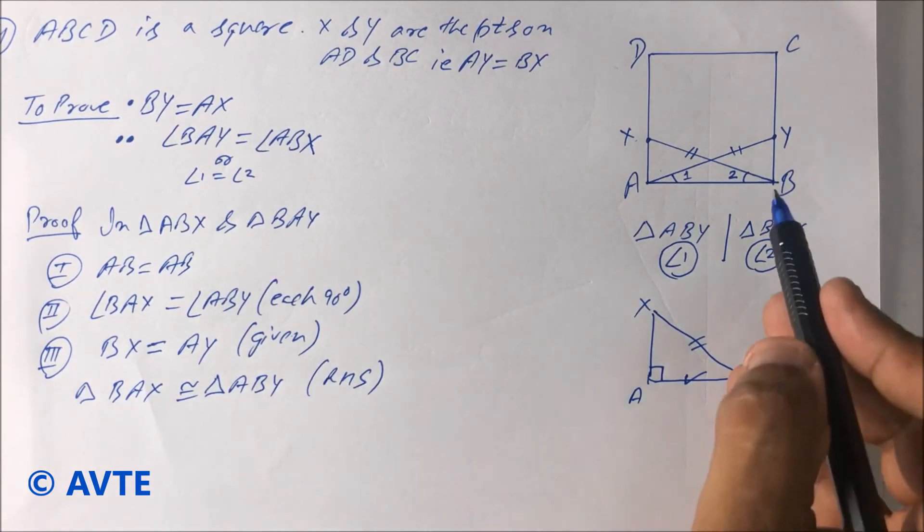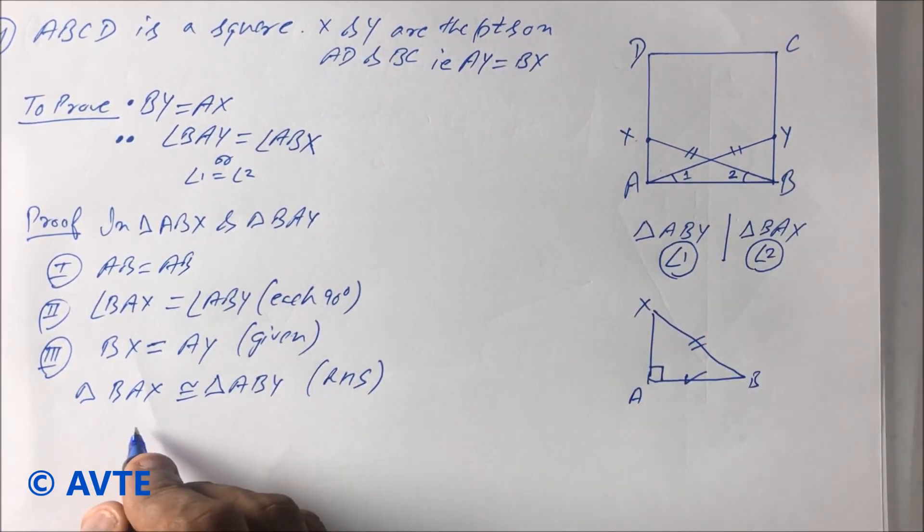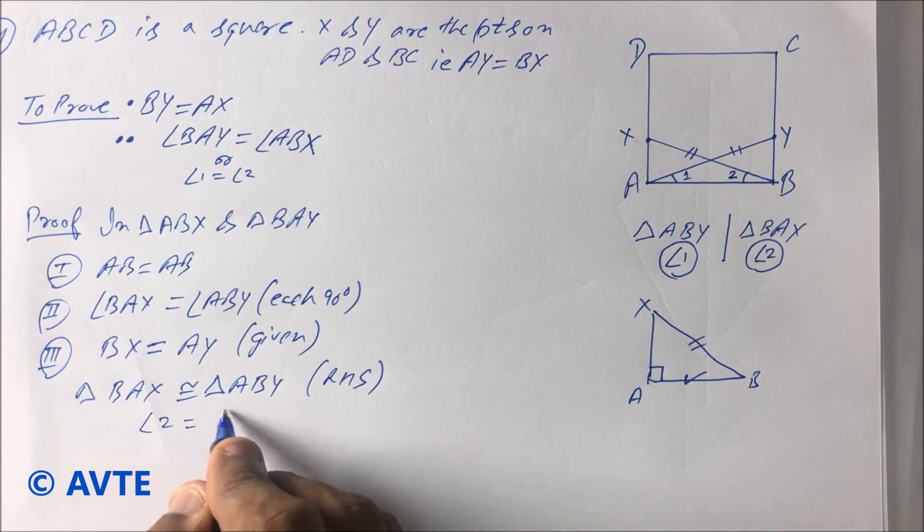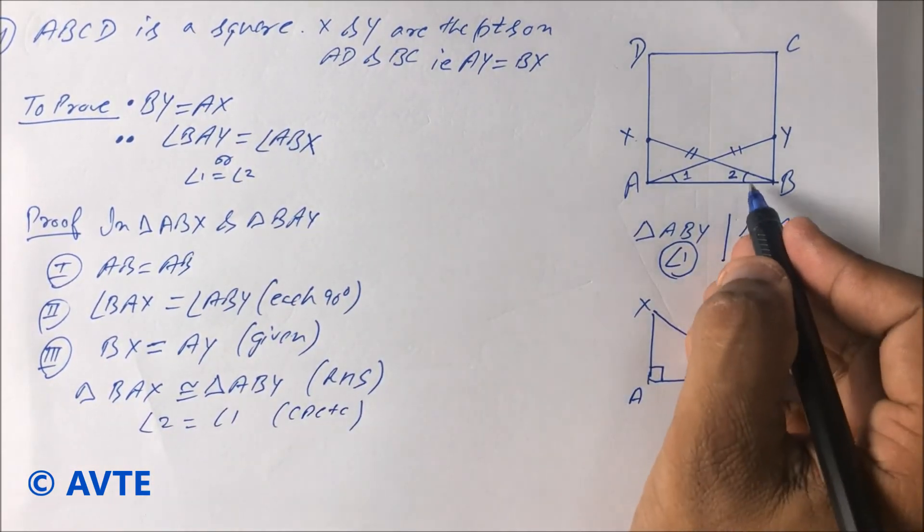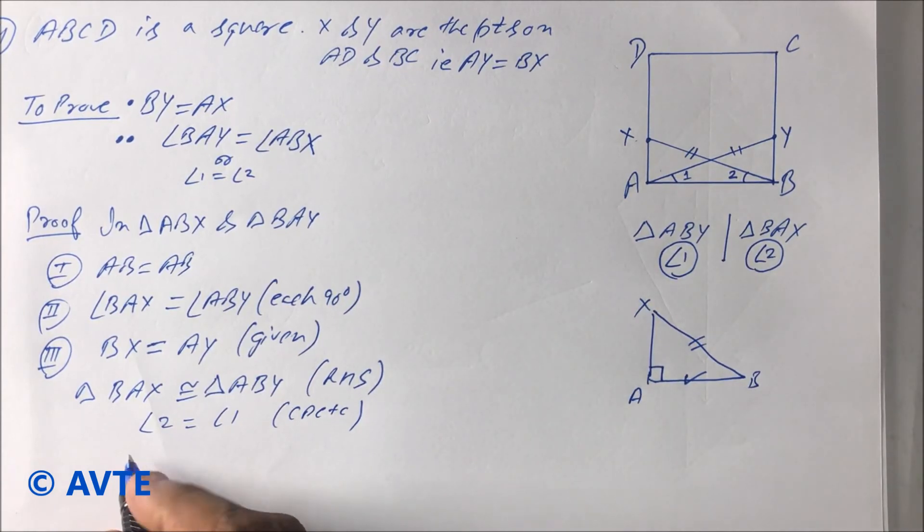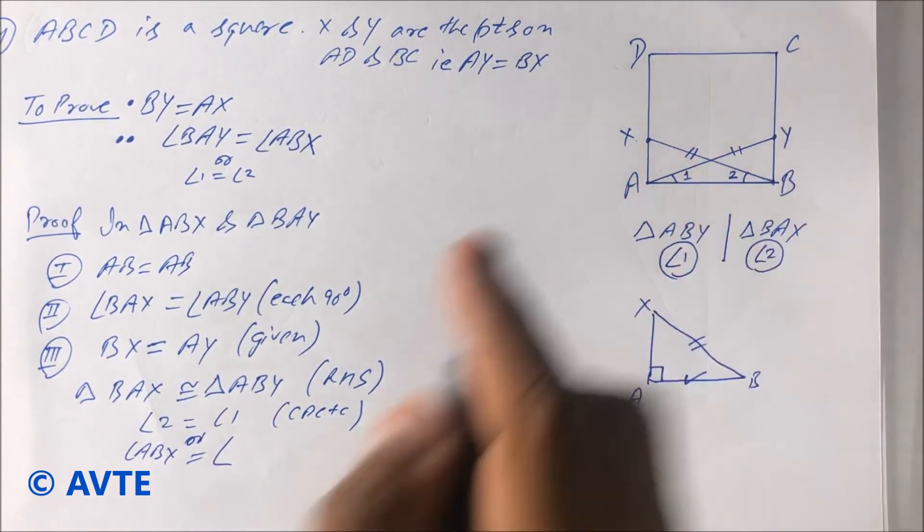Okay, and in triangle BAX angle 2 is coming. So angle 2 is equal to angle 1. Reason is CPCTC. You can write down the angle 2 name. Angle 2 name is angle ABX and angle 1 name is angle BAY.